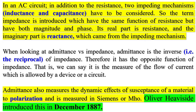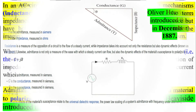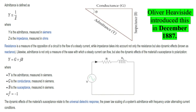When looking at admittance versus impedance, admittance is the inverse, i.e., the reciprocal of impedance. Therefore it has the opposite function of impedance — it is the measure of the flow of current which is allowed by a device or circuit. Admittance also measures the dynamic effects of susceptance of a material to polarization and is measured in Siemens or Mho. Oliver Heaviside introduced this in December 1887.